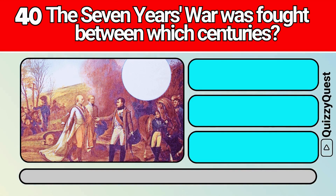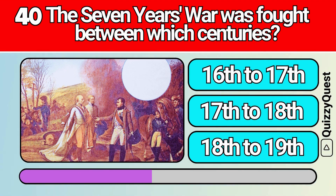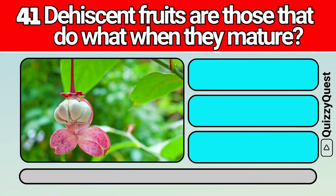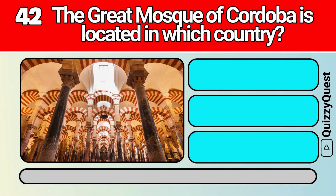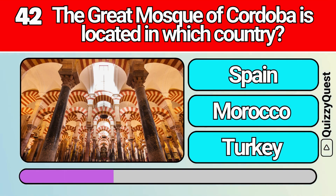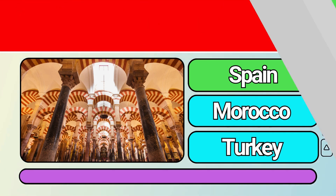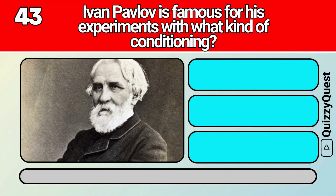The Seven Years' War was fought between which centuries? Dehiscent fruits are those that do what when they mature? The Great Mosque of Córdoba is located in which country? Ivan Pavlov is famous for his experiments with what kind of conditioning?